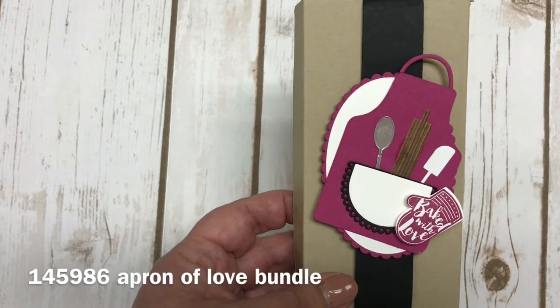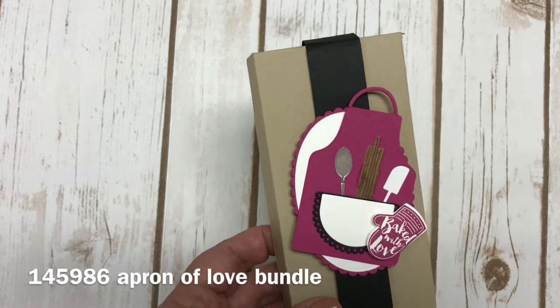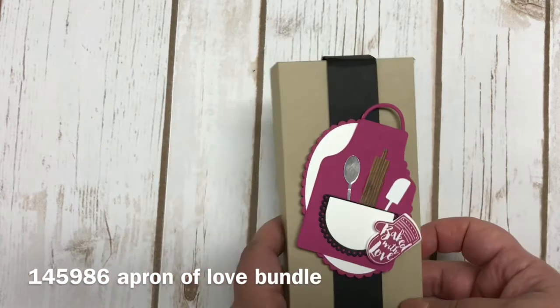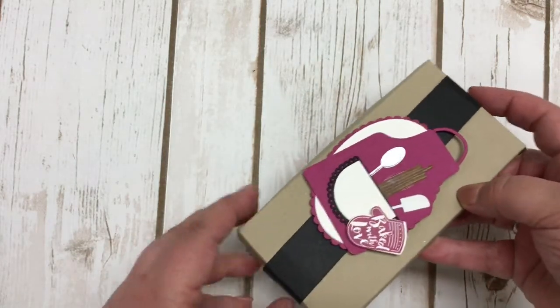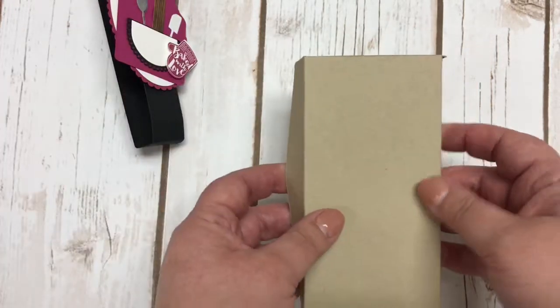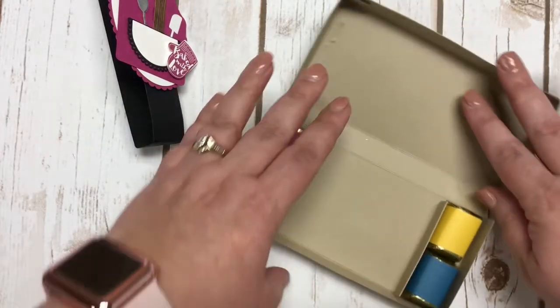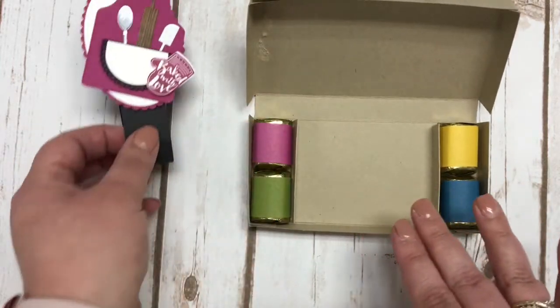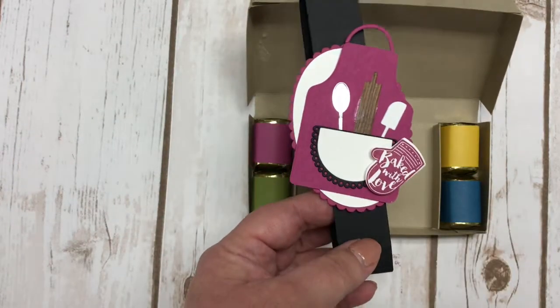If you haven't ordered that yet, make sure you get that before the end of May because that bundle will be going away in our occasions catalog. The project that I'm sharing with you today is this cute little box that is designed with this little belly band that slides right off. Inside this box it's designed to have a couple pieces of candy, and I would suggest a cookie here because my little front of the box says baked with love.